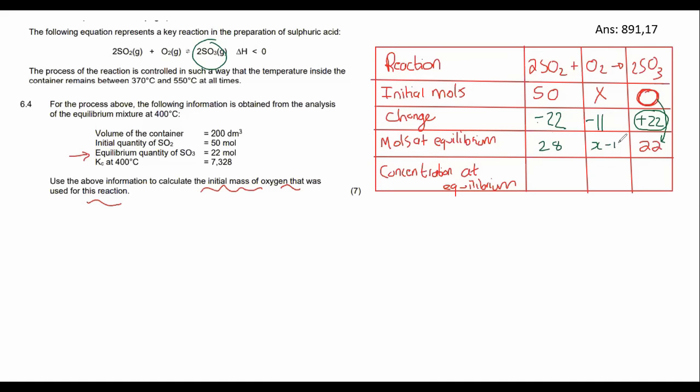X minus 11 is just X minus 11. Then to find the concentration, I use the formula C equals N over V, and they will give us the volume of the container. And here they give it to us as 200 decimeters. So I will then use that formula over here, over here, and over here. Now I'm going to go work out the concentration by saying 28 divided by 200, which is 0.14. Then this one would be X minus 11 over 200. And then this one would be 22 over 200, which is 0.11. So there we have it, guys. We have everything in our Kc table filled in.